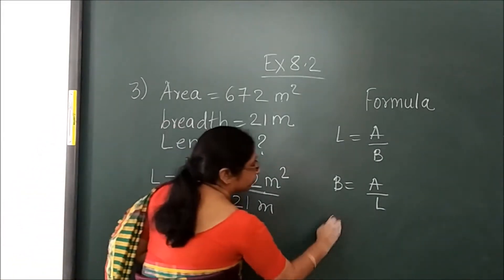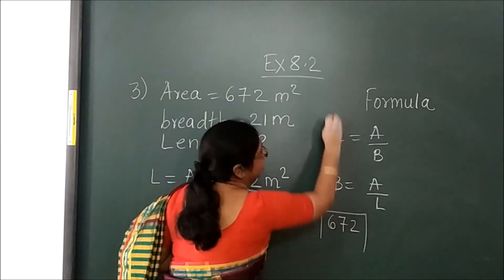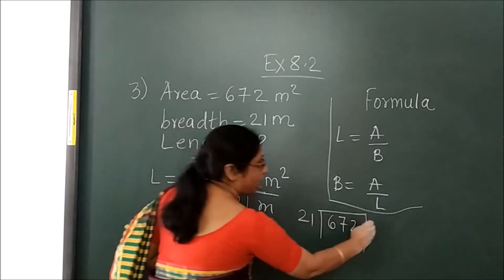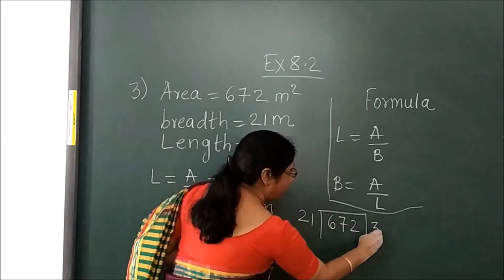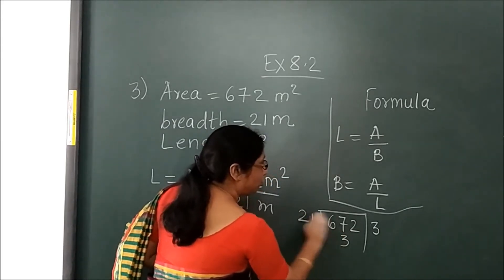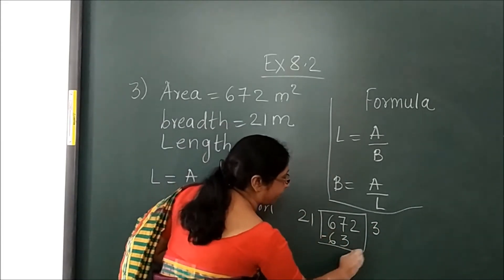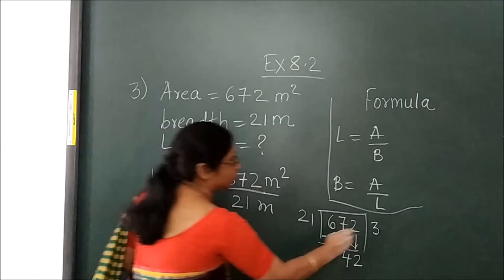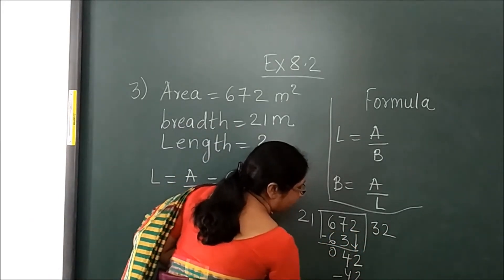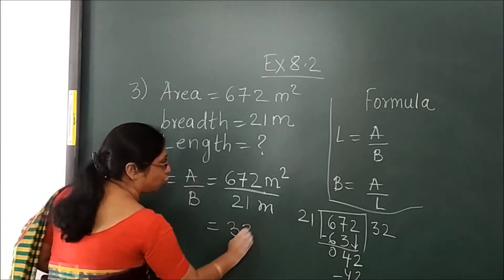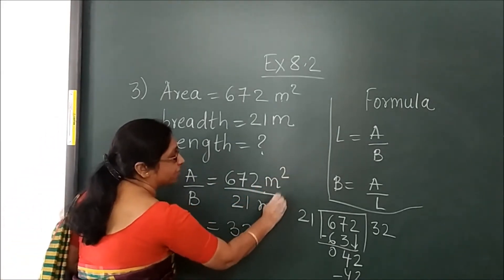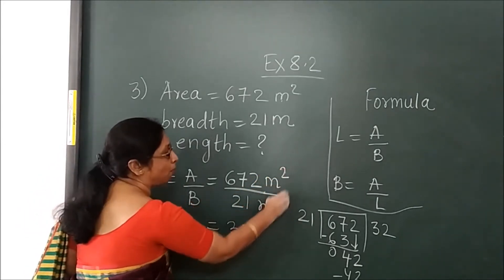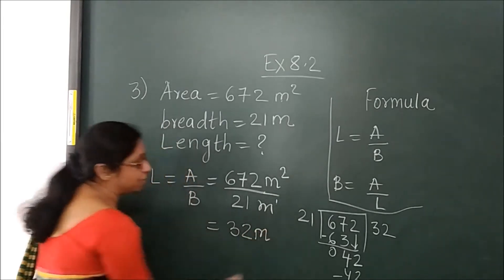672 divided by 21 — simple division. 21 goes into 63: 3 times. Then subtract to get 42. 21 times 2 is 42. So the answer is 32. Now since we have meter squared divided by meter once, we subtract the powers: 2 minus 1 equals 1. So the answer is 32 meter.